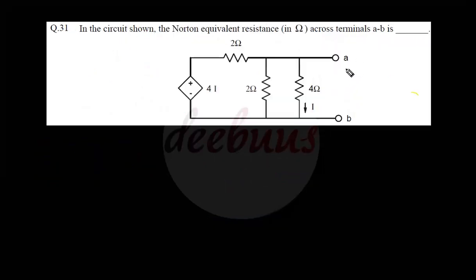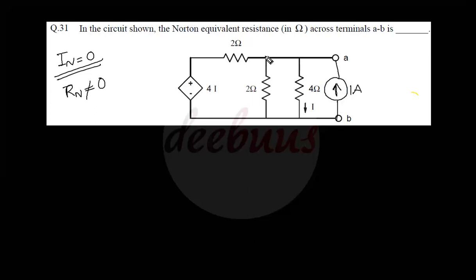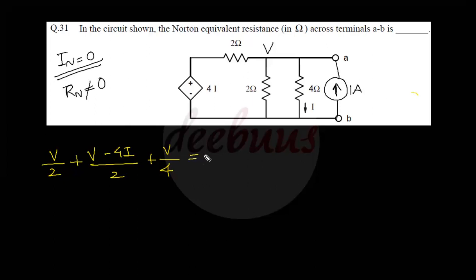Moving to the next question: calculating the Norton equivalent resistance in ohms across terminals AB. There is no independent source, so the Norton current is zero, but we still need to find RN. Applying a test 1-ampere current source at terminals AB and writing the node equation with node voltage V: V/2 plus (V minus 4i)/2 plus V/4 equals 1 ampere.